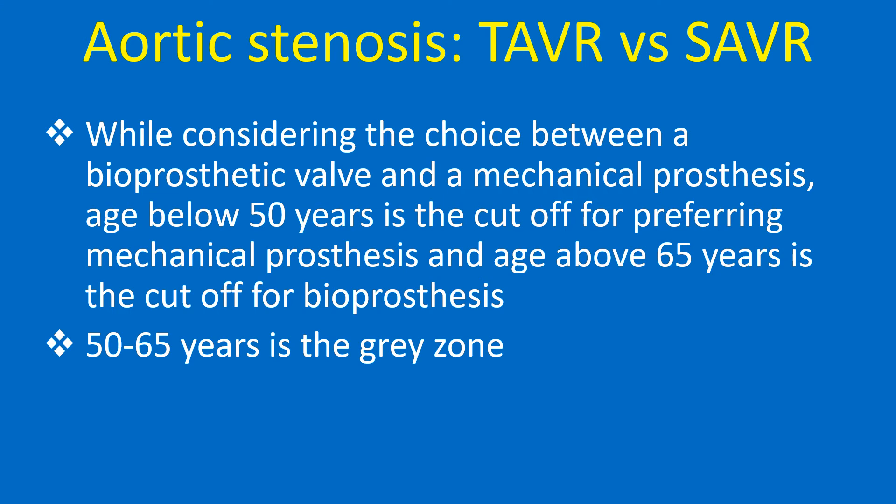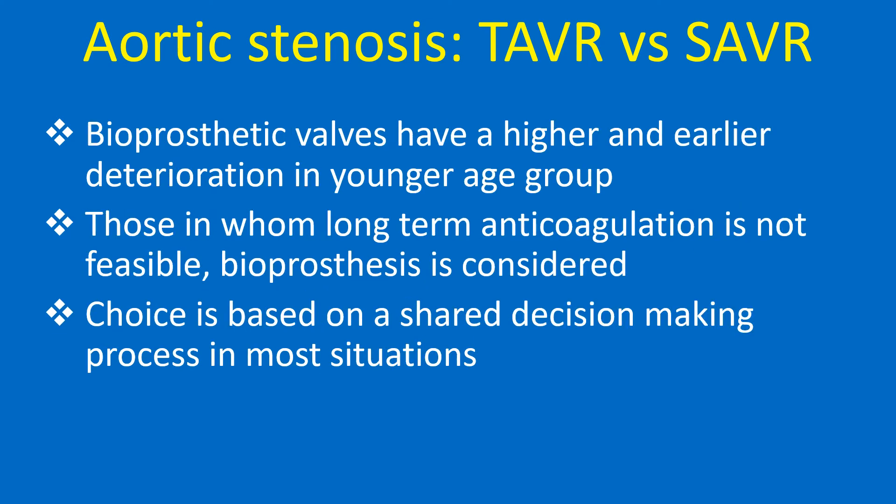While considering the choice between a bioprosthetic valve and a mechanical prosthesis, age below 50 years is the cutoff for preferring mechanical prosthesis and age above 65 years is the cutoff for bioprosthesis; 50 to 65 years is the grey zone. Bioprosthetic valves have a higher and earlier deterioration in the younger age group. Those in whom long-term anticoagulation is not feasible, bioprosthesis is considered. The choice is based on a shared decision-making process in most situations.